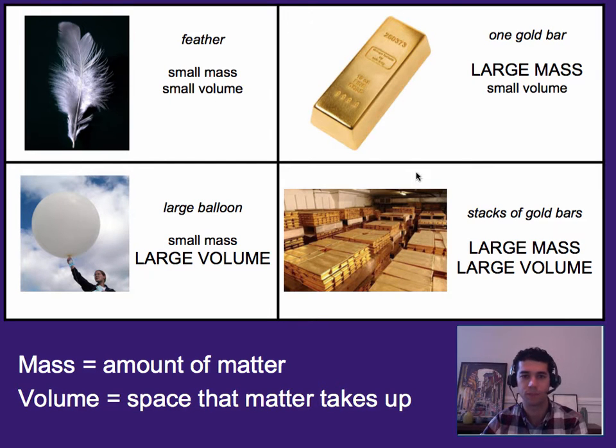So to help illustrate the difference, a feather would be a good example of small mass and small volume versus a large balloon would be small mass, but still a large volume. An example of a small volume or relatively small volume, but a large mass is one gold bar versus if we had like Fort Knox or a whole stack of them, that would be large mass and large volume. Both is very massive, lots of stuff in it or matter in it. And it also takes up a fair amount of space in a warehouse.